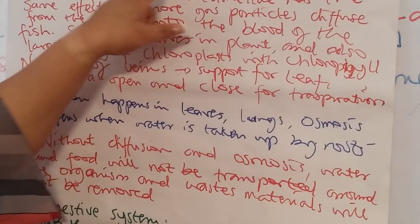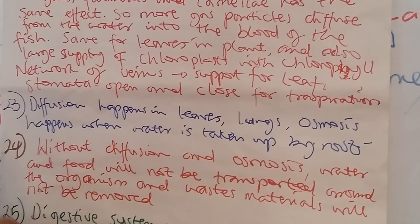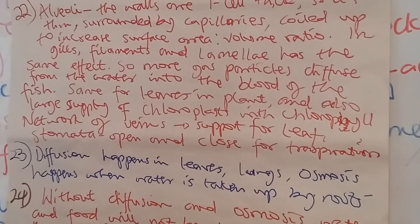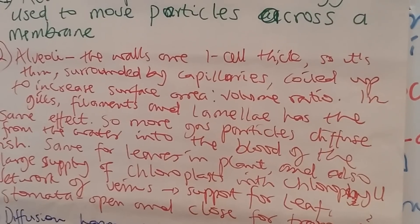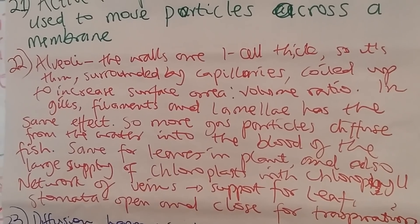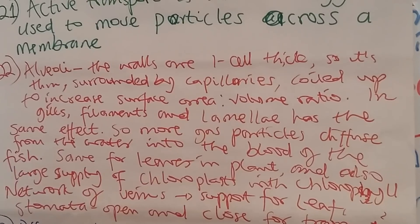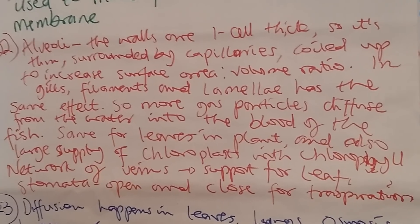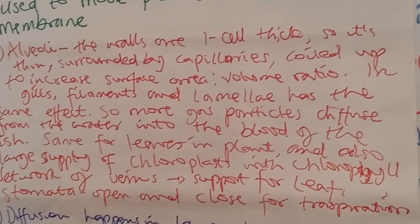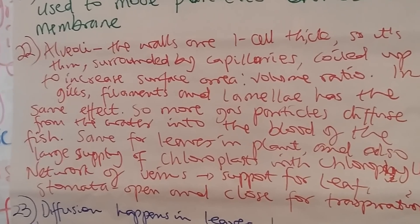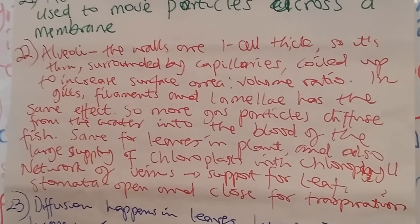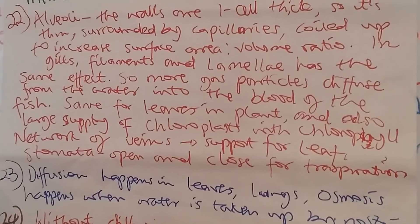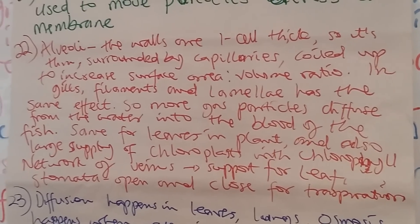The alveoli are surrounded by blood capillaries, which are also thin and carry a large volume of blood around the alveoli. This enables quick diffusion of gases. For example, blood rich in carbon dioxide delivers it to the alveoli where carbon dioxide concentration is lower, so carbon dioxide diffuses quickly into the alveoli to be expelled.